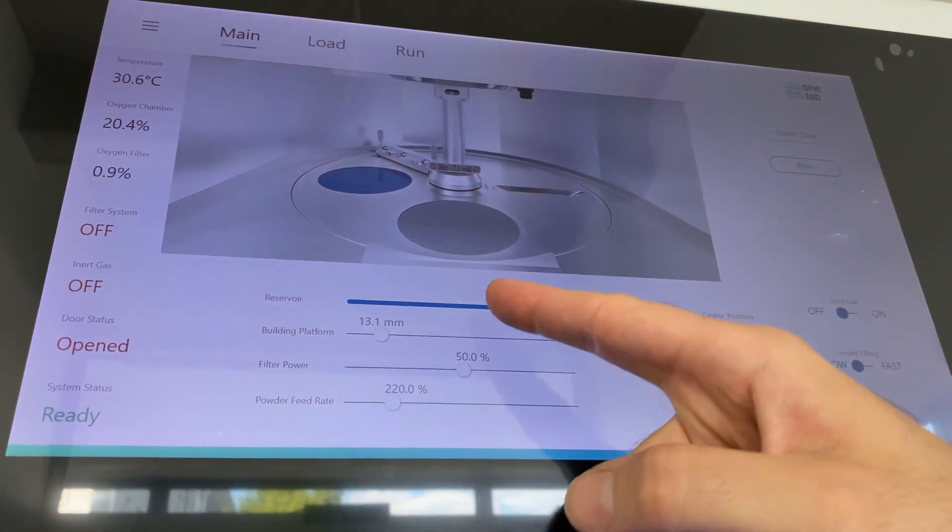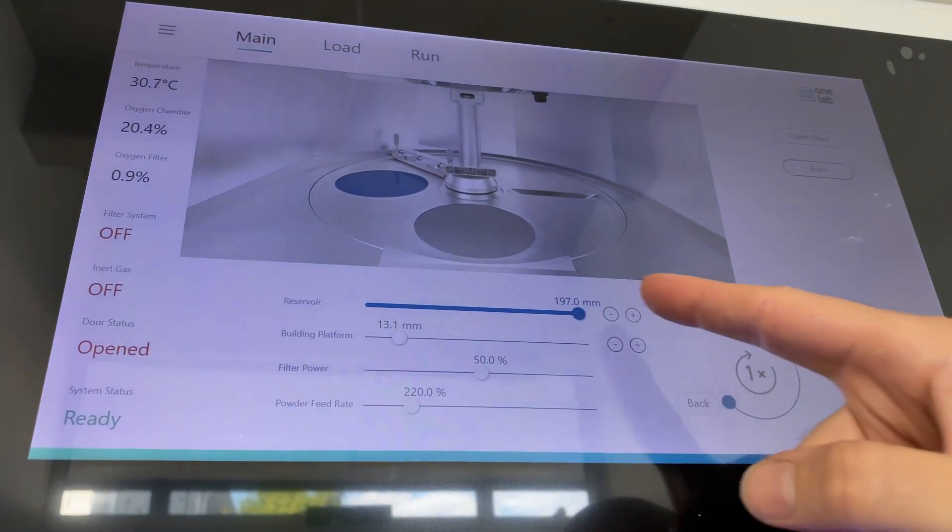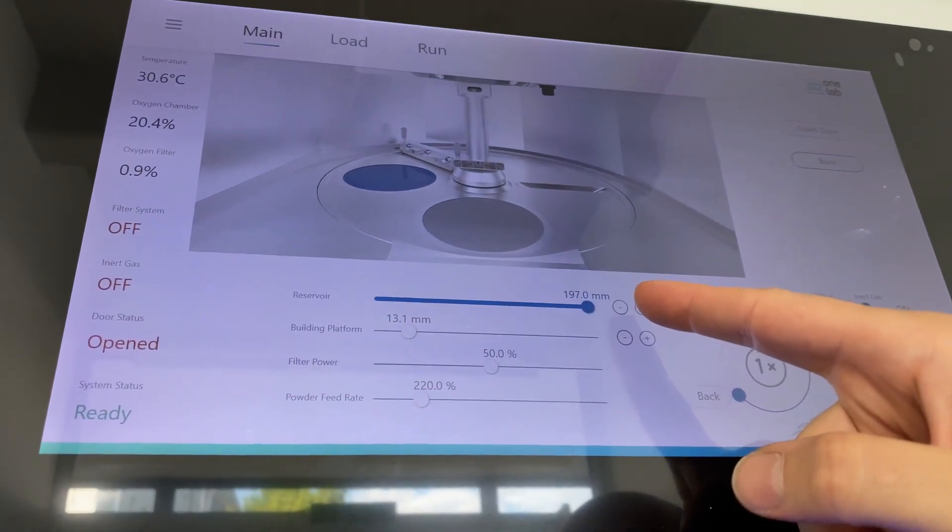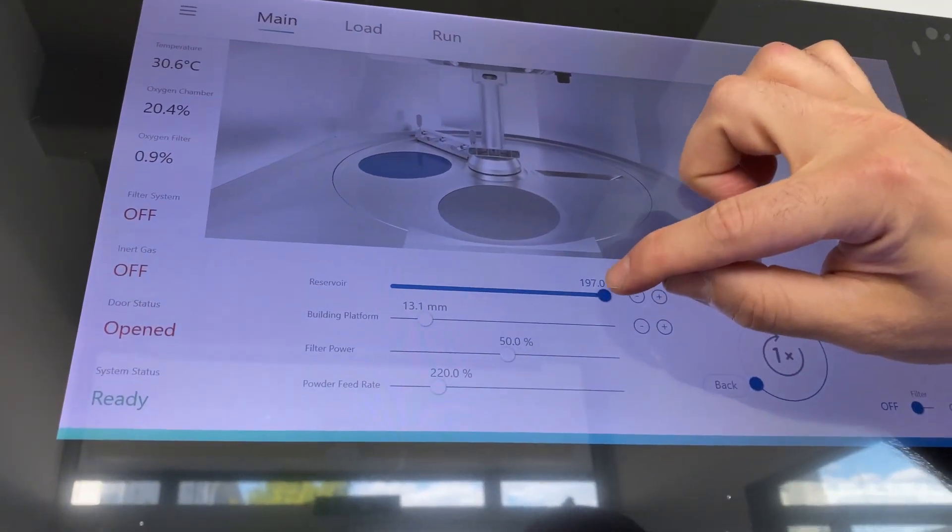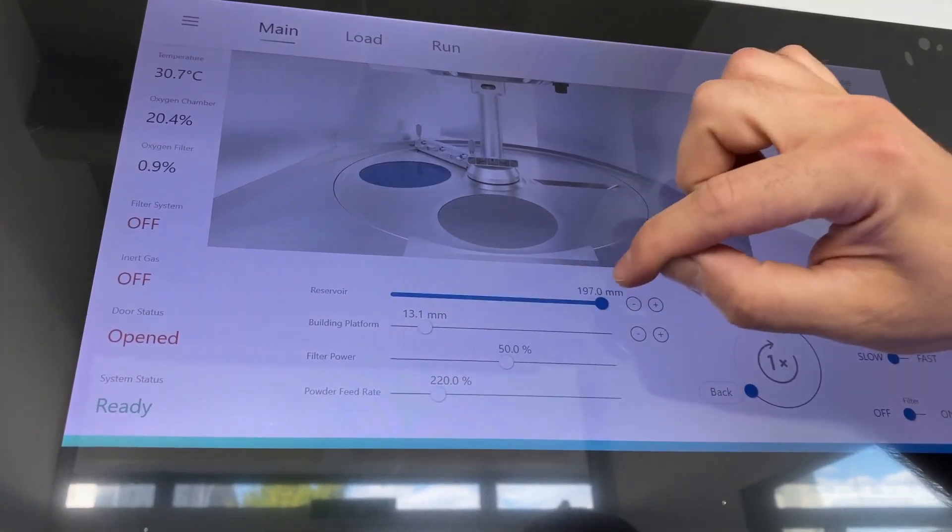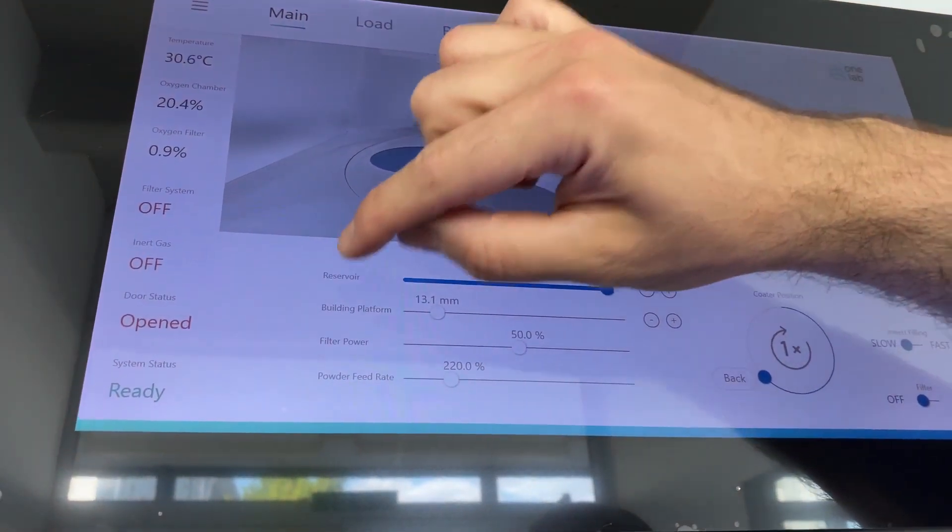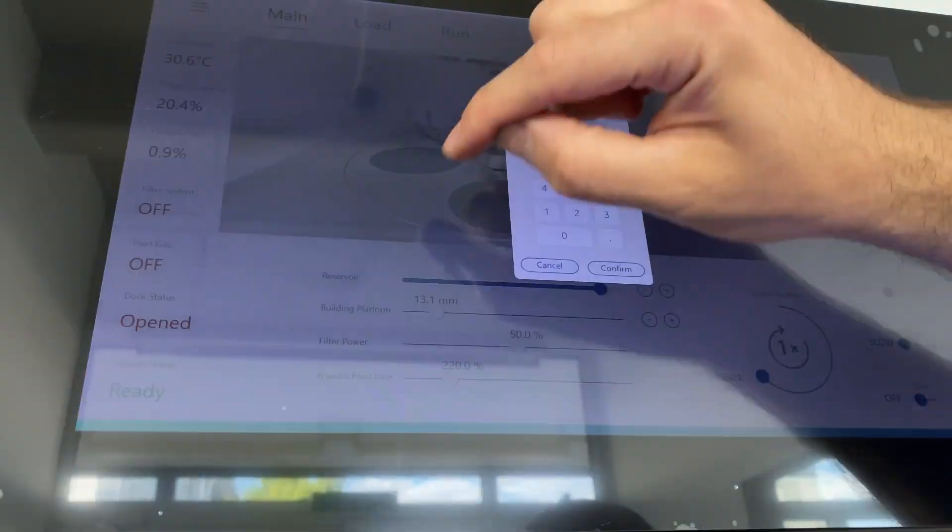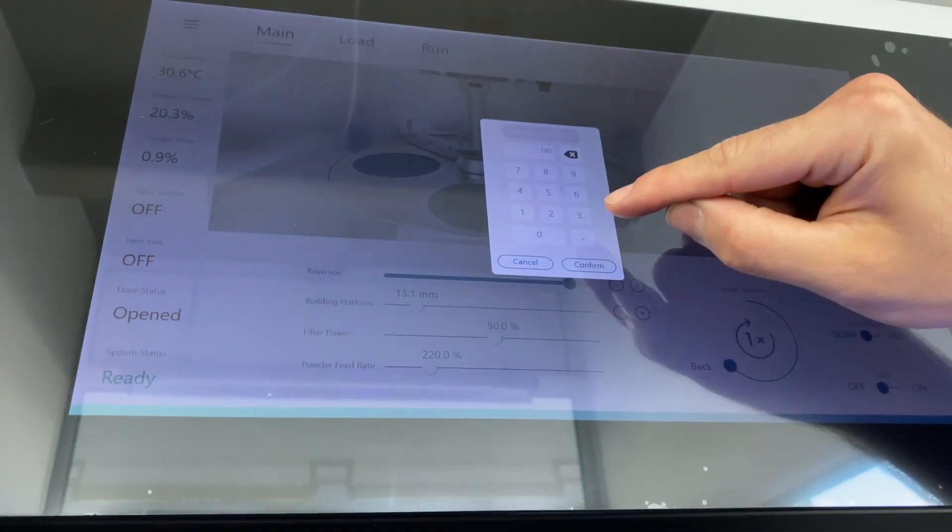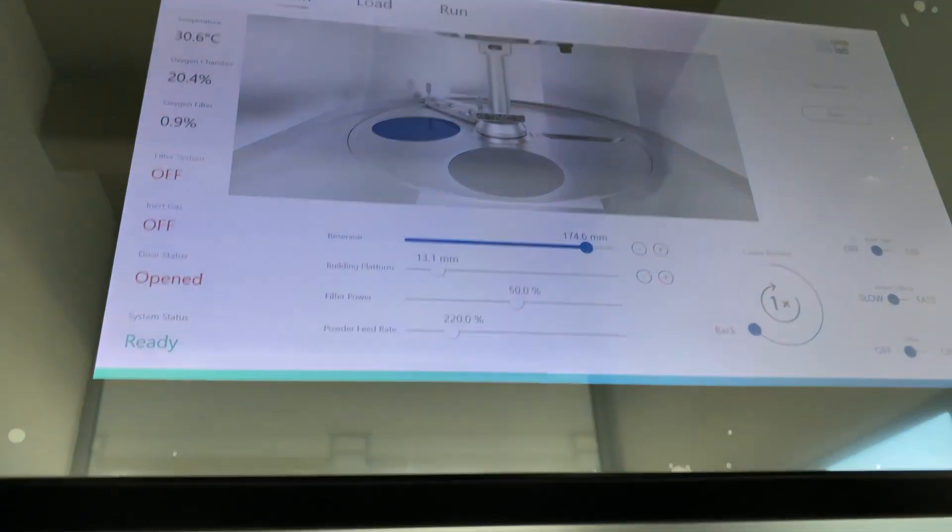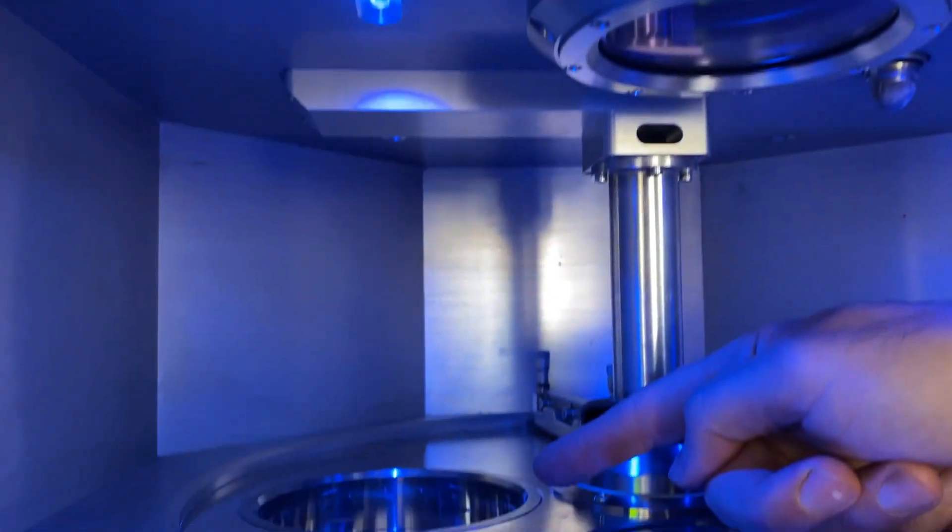To move the reservoir, there are three options. You can do little steps with the plus or minus button. You can just tap it and move it manually. Or you can double click on reservoir and put in any value you like. As you can see, the axis is moving.